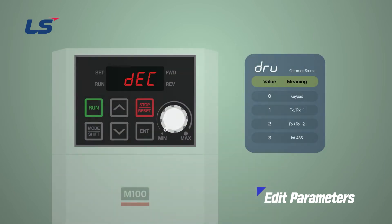Next, we will select the driving command method. From the previous screen, use the up arrow key to move to the DRV parameter. Here, press the Enter key to enter the edit screen.